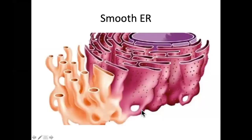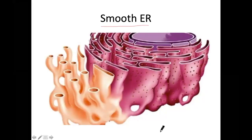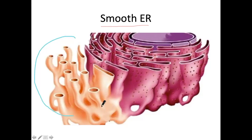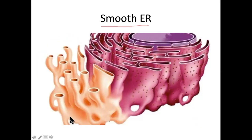In images of the ER, the smooth ER lacks the dots, while the rough ER is studded with ribosomes. Please take note of the difference.